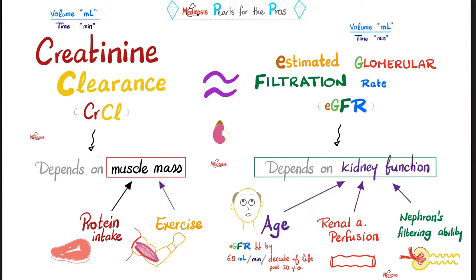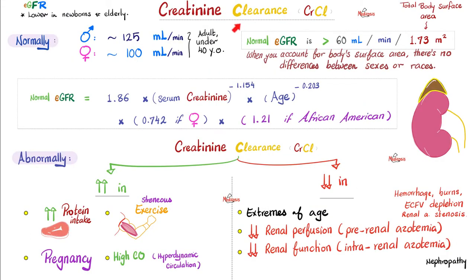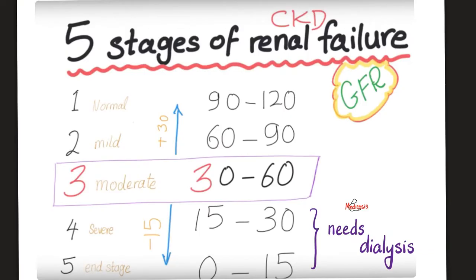Creatinine clearance, the volume of plasma that got cleared of creatinine per unit time, is a rough estimate of your glomerular filtration rate, which is the volume filtered per unit time. But today's topic is serum creatinine, that's a concentration.